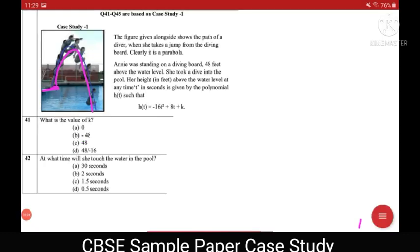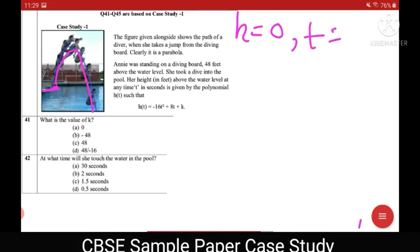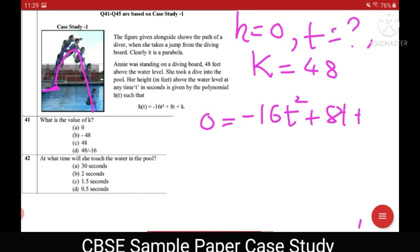Question number 42 says at what time she will touch water in the pool. So when she touches water in the pool at that time her height is 0. And we have to find out the time and value of k we have found in the first part we shall take it as 48 only. So let us apply in this polynomial. Height at that time is 0 minus 16t square plus 8t plus 48. So this gives us a quadratic equation.